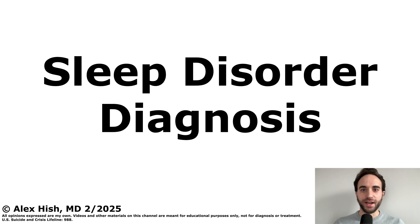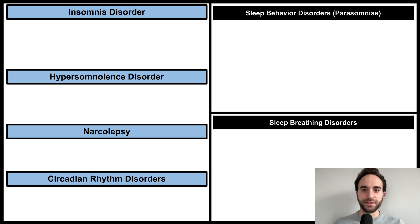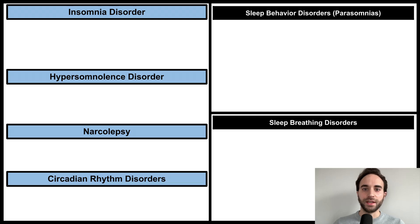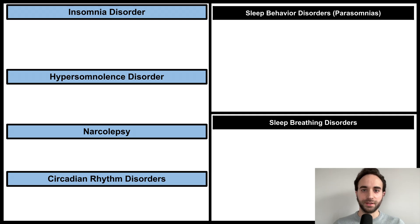This talk is an overview of the diagnosis of sleep disorders. It will review the diagnoses in the DSM chapter titled Sleep-Wake Disorders, with visual organizers and mnemonics to help you remember the criteria. Specifically, I'll review what I consider to be the core sleep disorders, listed here on the left, then move on to the sleep behavior disorders and sleep breathing disorders on the right.